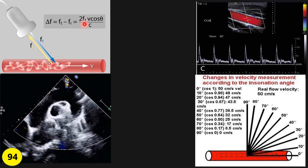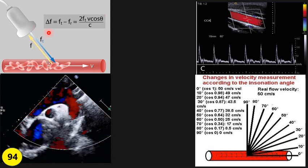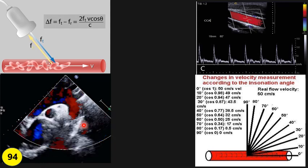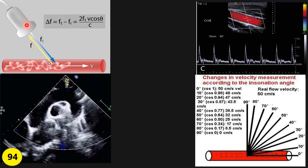If the angle between the insonation and direction of flow becomes 90 degrees, the cosine of 90 degrees is zero. This means if the transducer hits a vessel at a right angle, you cannot detect any Doppler shift — it shows black or zero, and in color Doppler you see no color. That is why when you do IVC or abdominal aorta, you must make the direction of blood flow as parallel as possible to the sound wave.